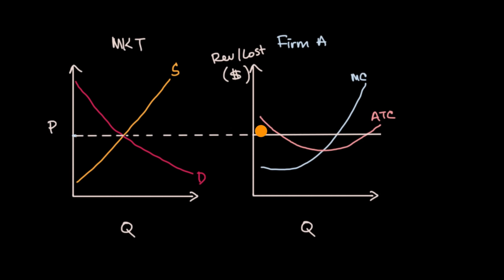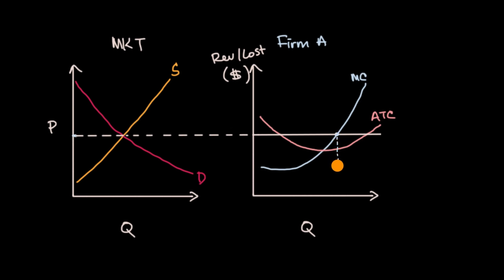It would be rational for firms to choose what quantity to produce. It makes sense to keep producing while marginal revenue is higher than marginal cost, up to and including when marginal revenue equals marginal cost. So for this firm, at this current state of affairs, it would be rational to produce this quantity right over there. At that quantity, they're going to make an economic profit.